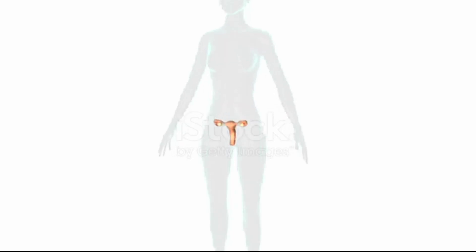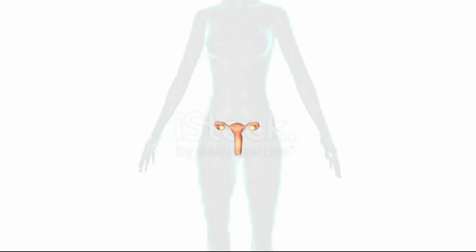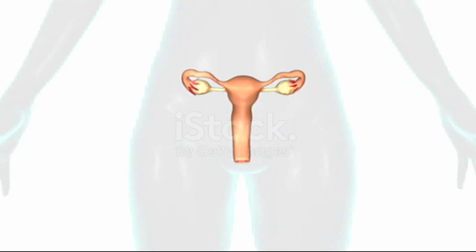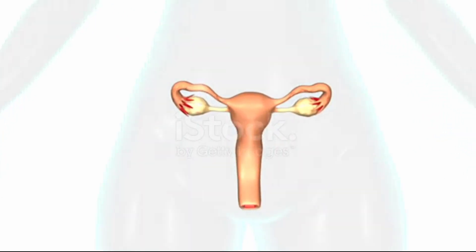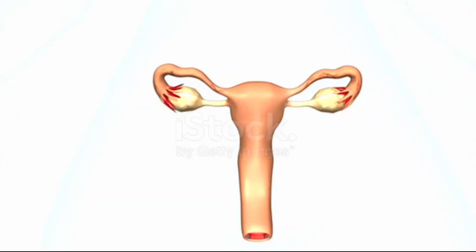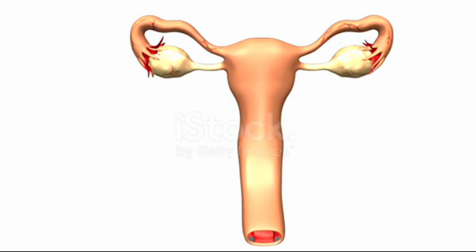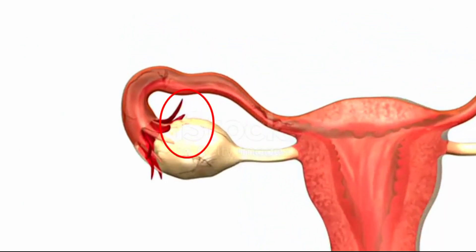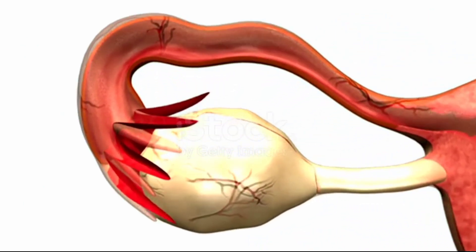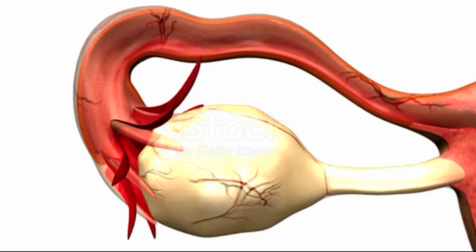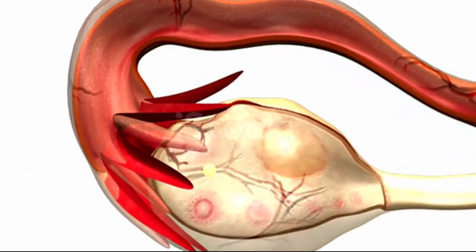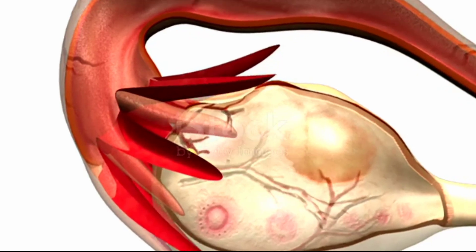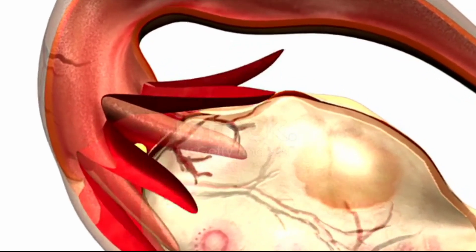Today I'll discuss fertilization — how the process of fertilization occurs in the female and how the fetus develops week by week during pregnancy. Here is the ovary, and the function of the ovary is to produce eggs. Whenever the ovary releases eggs, this process is called ovulation.